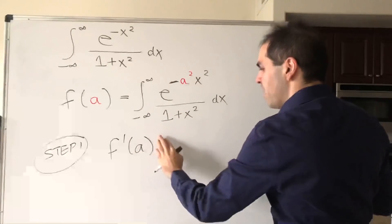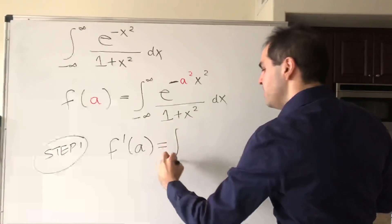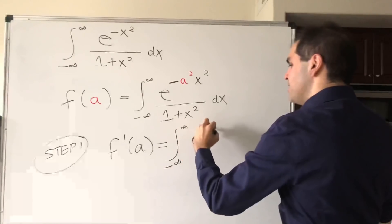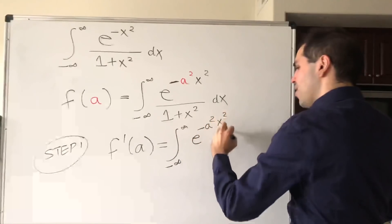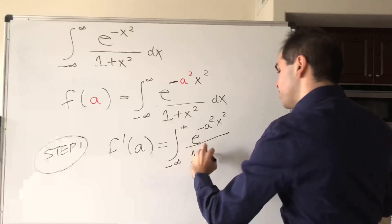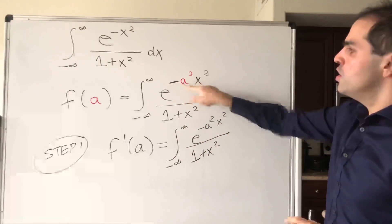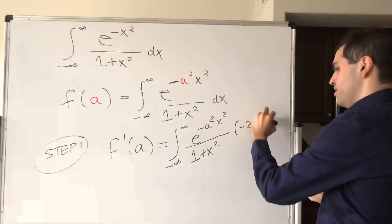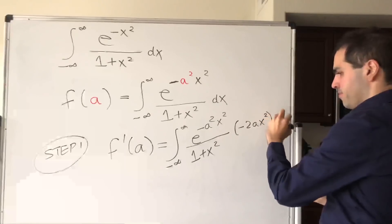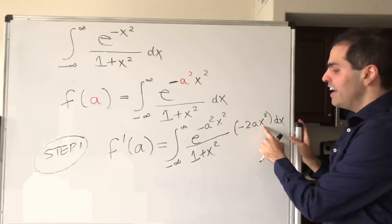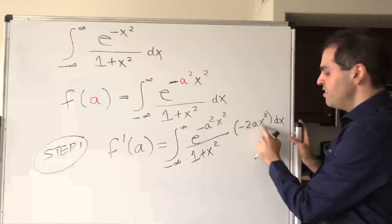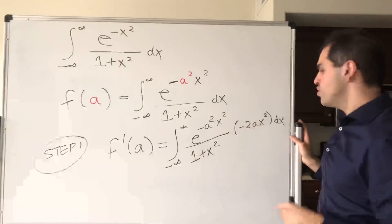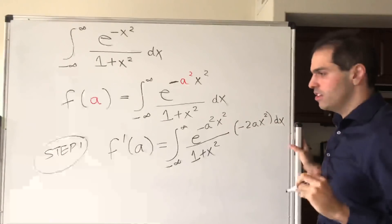So f'(a) becomes the integral from minus infinity to infinity of e^(-a²x²) / (1 + x²), and then using the chain rule we get minus 2ax² dx. Now the idea is: ideally we would like to cancel out this x² with the 1 + x² in the denominator. So let's use the trick of adding and subtracting 1 in the numerator.